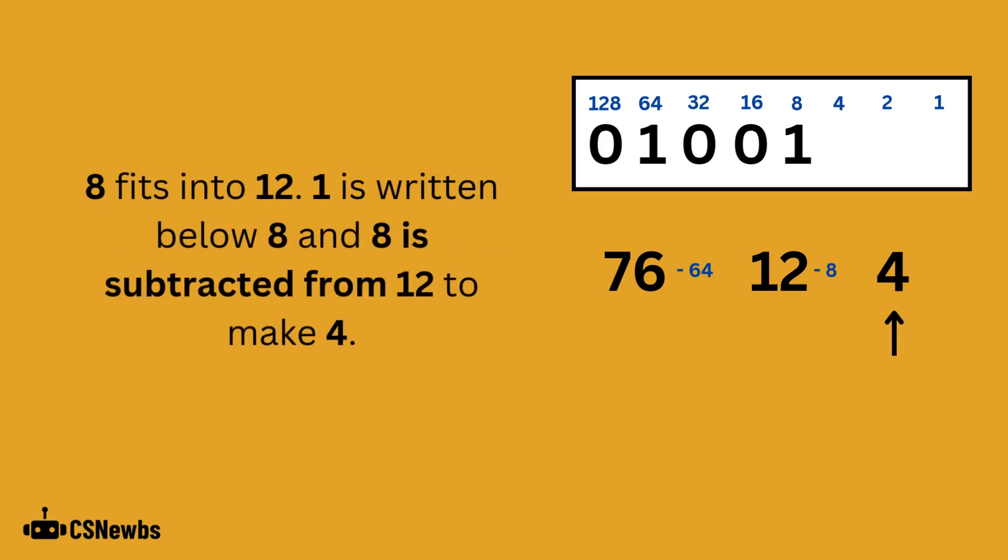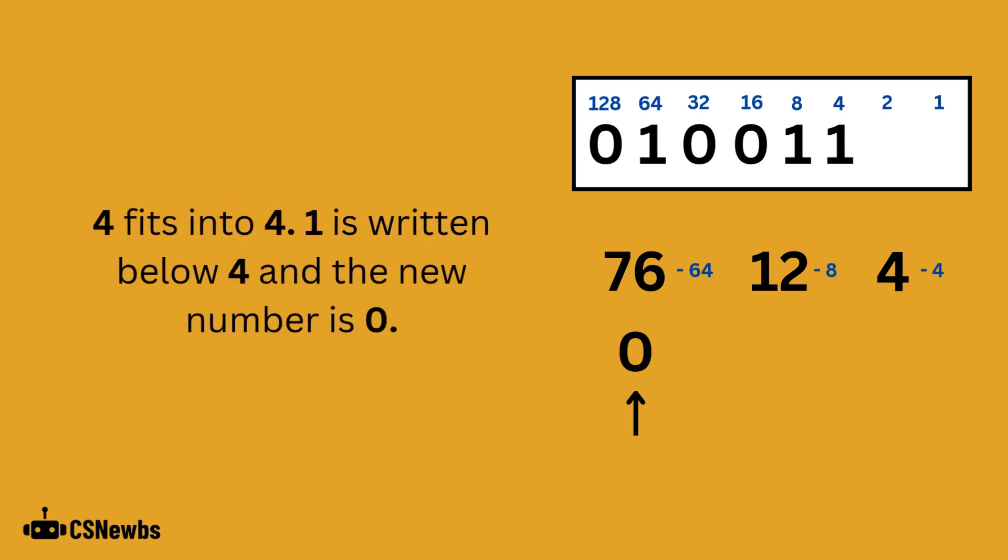8 does fit into 12, so 1 is written below the 8 place value, and 8 is subtracted from 12 to make the new denary number 4. 4 fits into 4, 1 is written below the 4 place value, 4 is subtracted by 4 to make the new denary value 0.